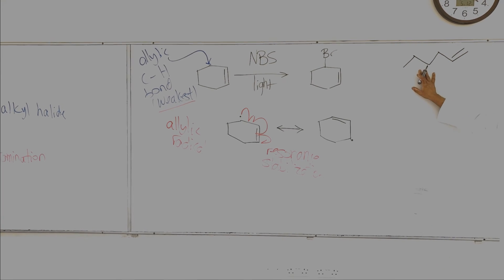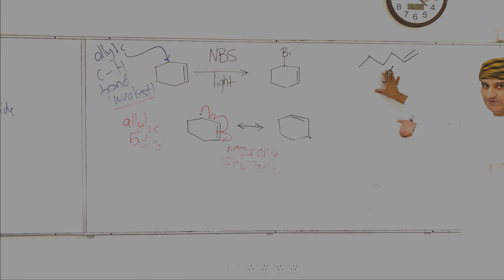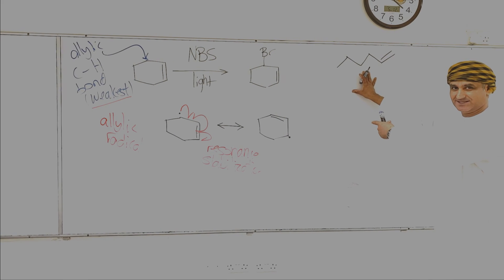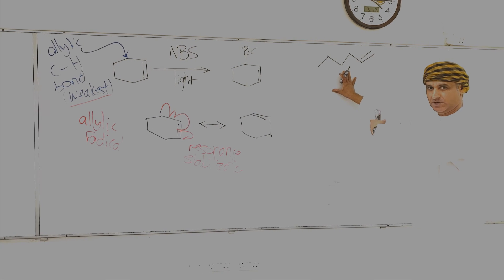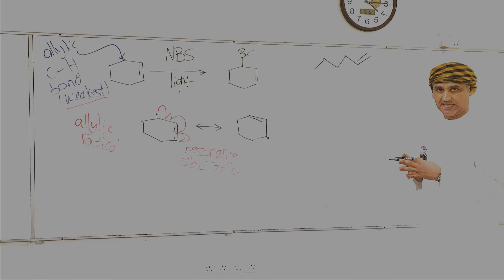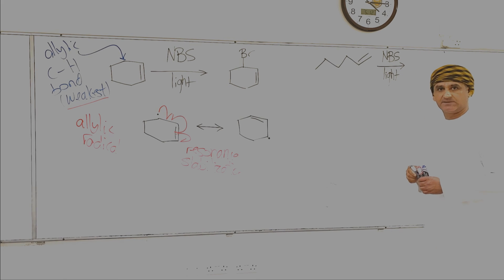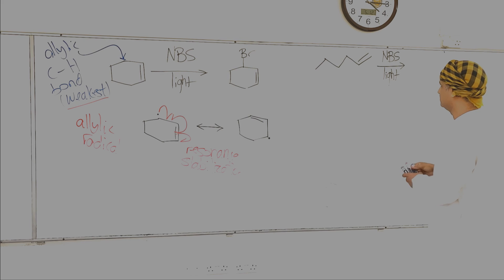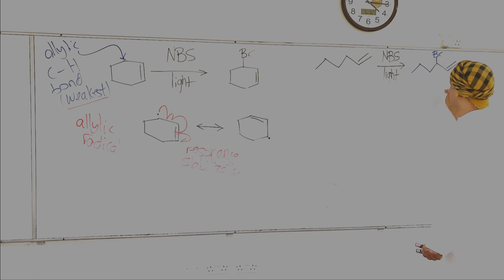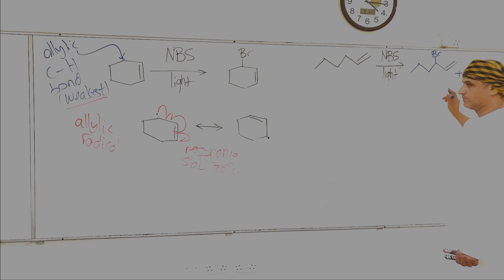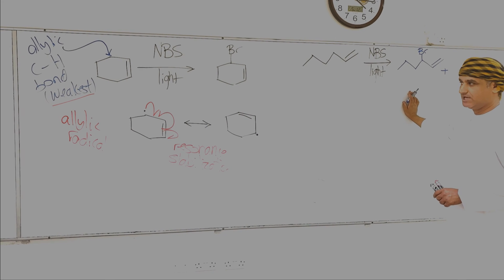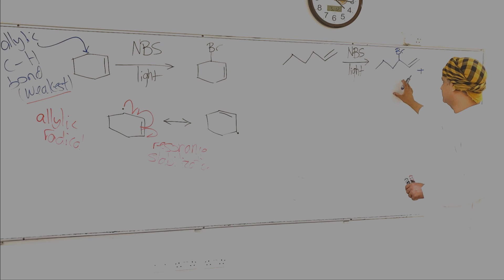Let's take another example. If we take this acyclic alkene and react it with NBS in the presence of light, we expect the reaction to take place at the allylic position — position three with respect to the double bond. That would be one of the products obtained, but it is not the only product, because of the resonance stabilization of the intermediate allylic radical.